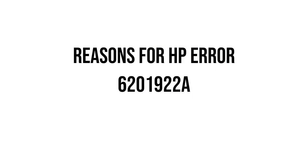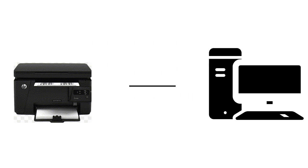Second, we understand the reasons for HP Error 6201922A. Reason 1: Availability Issues. An unfortunate association between the printer and the PC or organization can set off mistake 6201922A, prompting printing disappointments and correspondence errors.